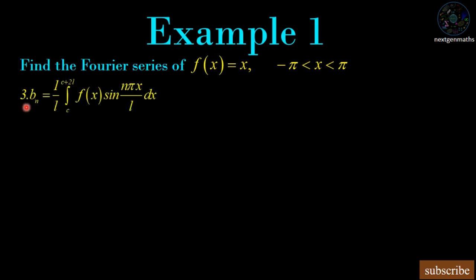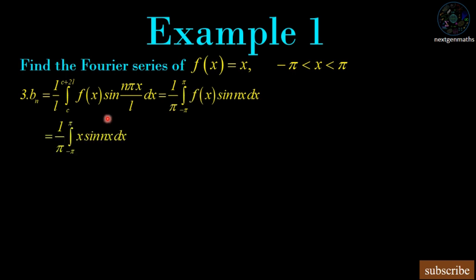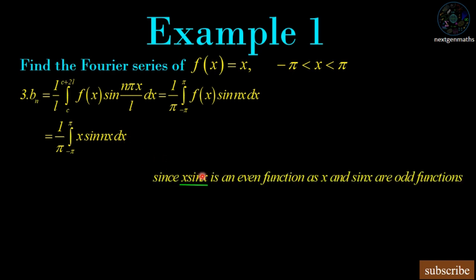Now we calculate the third Fourier coefficient bₙ = (1/L)∫[c to c+2L] f(x) sin(nπx/L) dx. Substituting c = −π and L = π, the π's cancel and we get (1/π)∫[−π to π] x sin(nx) dx. Since x is odd and sin(nx) is odd, their product x·sin(nx) is an even function. Integrating an even function over a symmetrical limit gives (2/π)∫[0 to π] x sin(nx) dx.